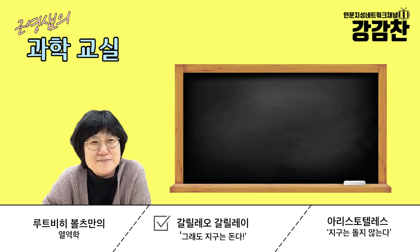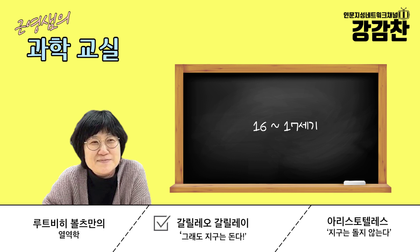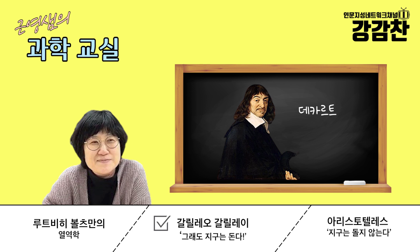스피노자가 망원경 렌즈를 깎아서 공급했다는 이야기도 있어요. '갈릴레오는 스피노자의 렌즈를 썼을까?' 같은 논문도 있죠. 이 19세기 중엽부터 20세기 중엽까지가 서구 역사에서 중요한 시기이고, 또 하나는 이 16~17세기 시기입니다. 스피노자가 1632년이고, 그보다 앞서서 데카르트, '나는 생각한다 고로 존재한다'가 있던 시기예요.